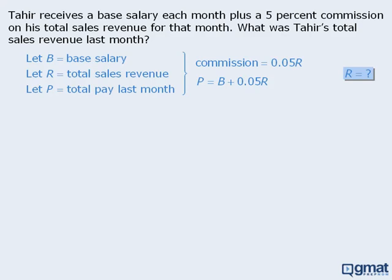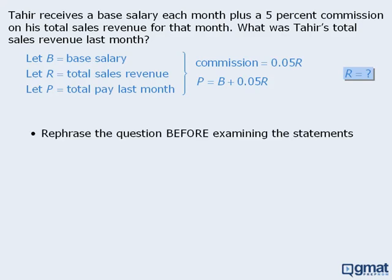Now, is there anything else we might do before examining the statements? In many cases, it is useful to first rephrase the target question to help us identify information in the corresponding statements that may be sufficient to help us answer it. We see that we need to find the value of R — but what information would be sufficient to determine the value of R? For example, would it be sufficient to know the sum of B and R? It's hard to tell at this moment.